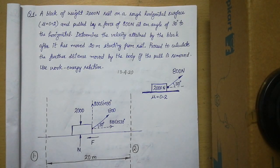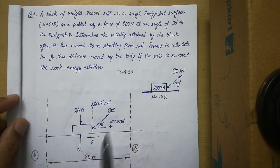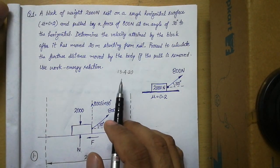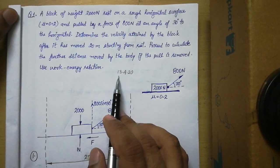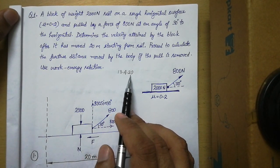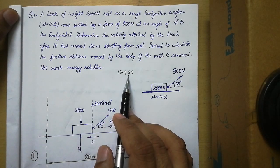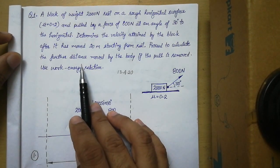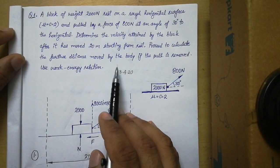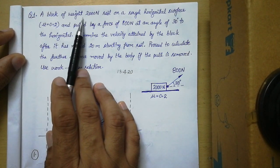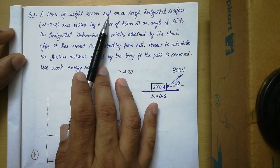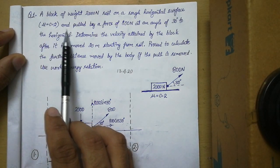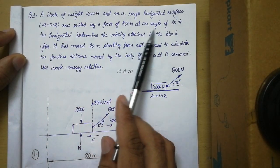Hello students, today I will talk about the third numerical on the topic kinetics of particles: energy and momentum methods. I have uploaded one file in your account named 13.4.20, which contains three numericals that I will discuss through these videos. This is the first numerical. The question states: a block of weight 2000 Newton rests on a horizontal surface where mu is equal to 0.2, and is pulled by a force of 800 Newton at an angle.